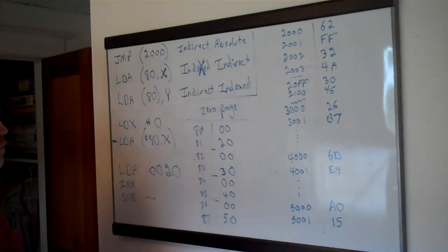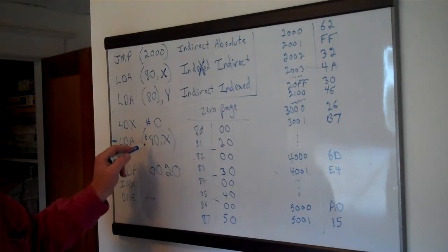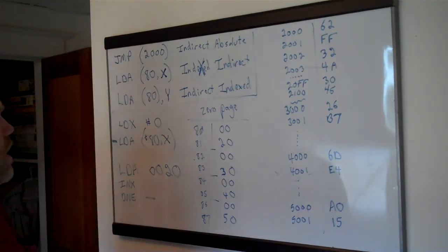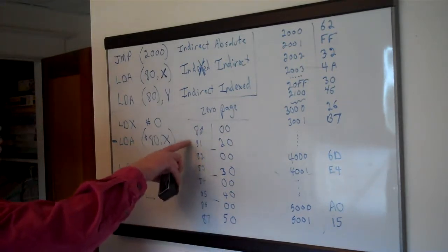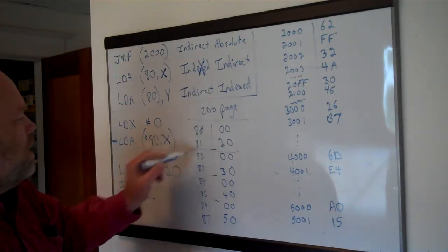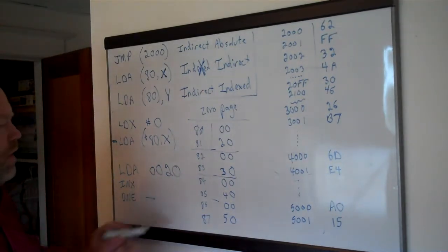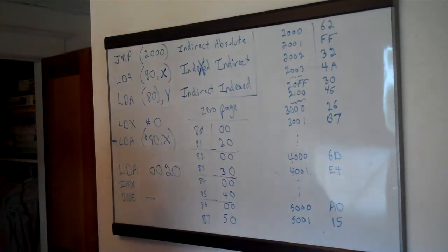Realistically, you would probably never do that. Also, both of these zero page methods — this one and the next — only work with zero page locations, which is one reason zero page locations are so precious. What you're doing is treating 80 and 81 together as an address. The next pointer pair you'd want would be 82 and 83, so you'd probably have a series of addresses in memory if you're actually using this indexed indirect method.